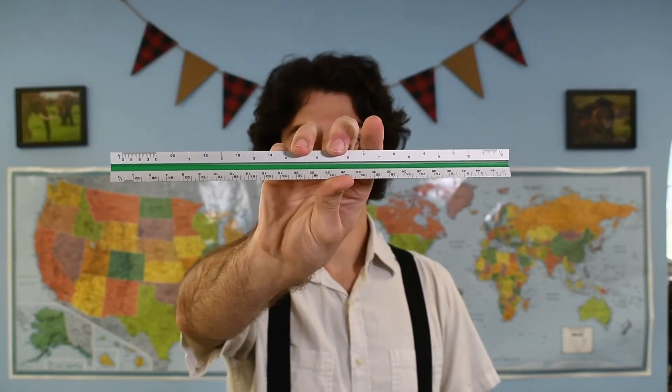Architect scales are used to draw something large and scale it down in order to get it on a piece of paper.